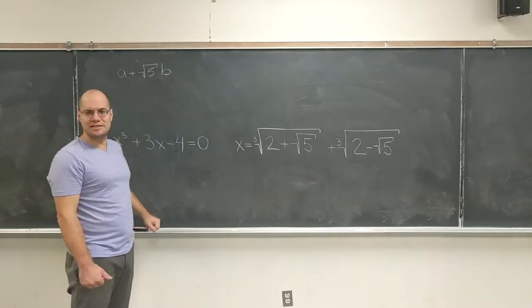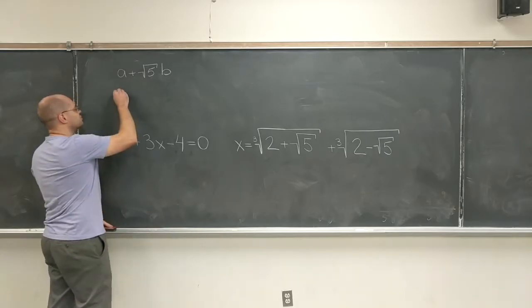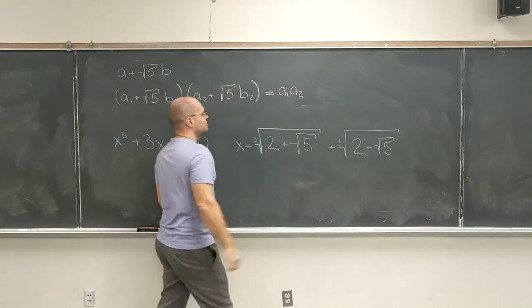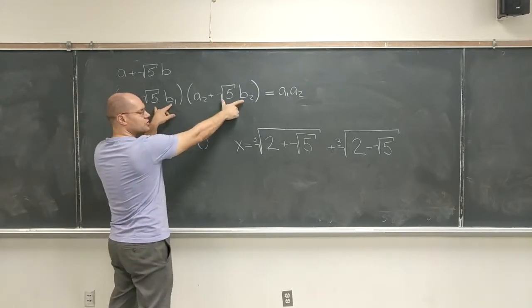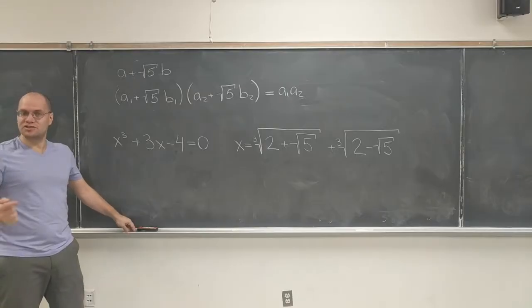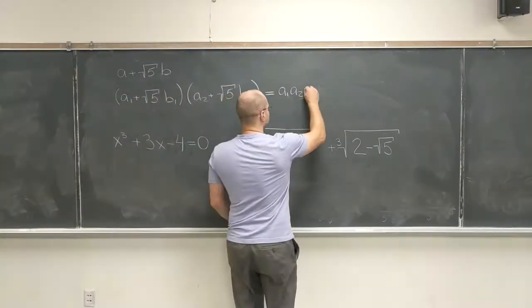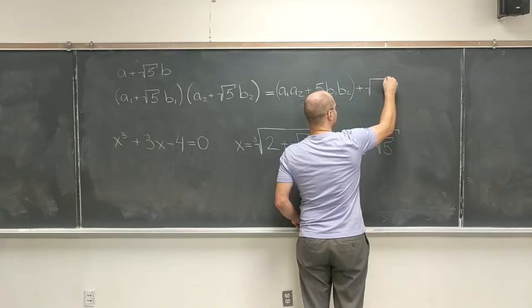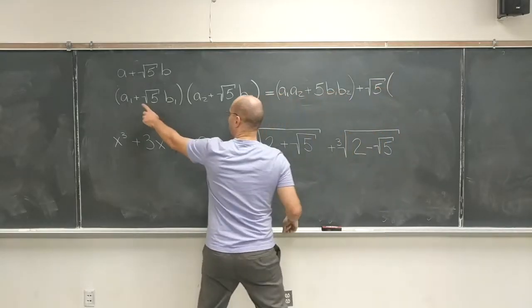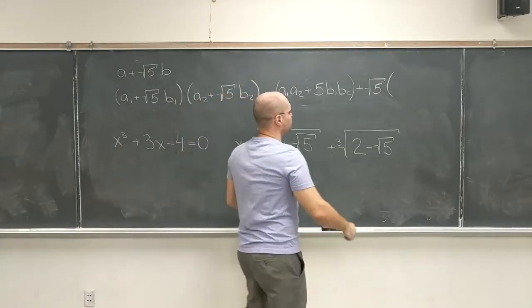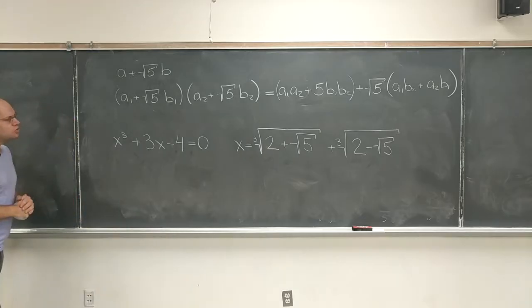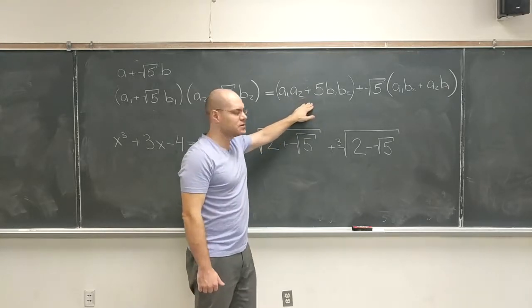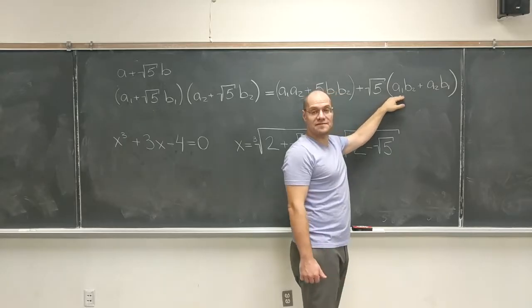What about multiplication? If I multiply two numbers of this kind? Maybe I should at least start writing it down. You can call it the rational part. Now let's combine the two b terms. We'll get 5b1b2, right? The square root goes away, which is nice. Plus square root of 5, and in parenthesis here we'll get a1b2 plus b1a2. So look, their product is also another number of the same kind. Rational plus square root of 5 times rational.